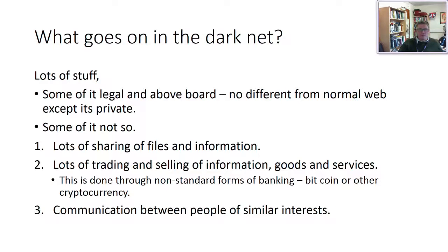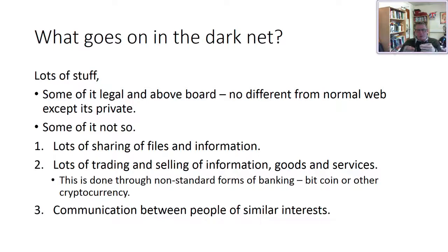What goes on on the dark net? Lots of stuff. Some of it's legal and some of it's no different from normal web stuff except it's private. There's lots of sharing of files and information, trading and selling of goods and services done through non-standard forms of banking — people don't use normal bank transfers; instead they use a system called Bitcoin or cryptocurrencies. There's also lots of communication between people of similar interests — communities forming around quite esoteric topics, political movements, and all sorts of things. The dark net is a good place where people can get together without fear of being ridiculed or pursued for legal reasons.